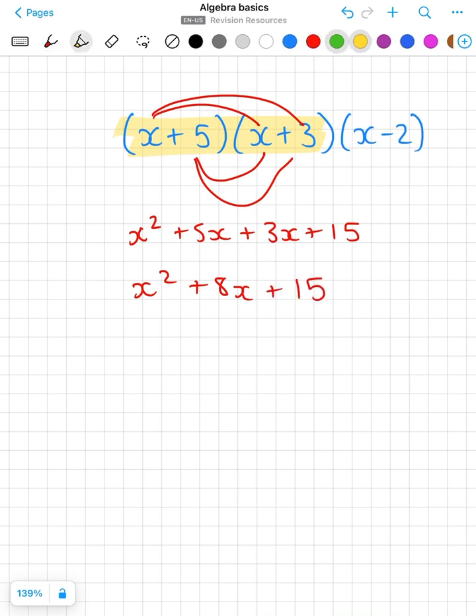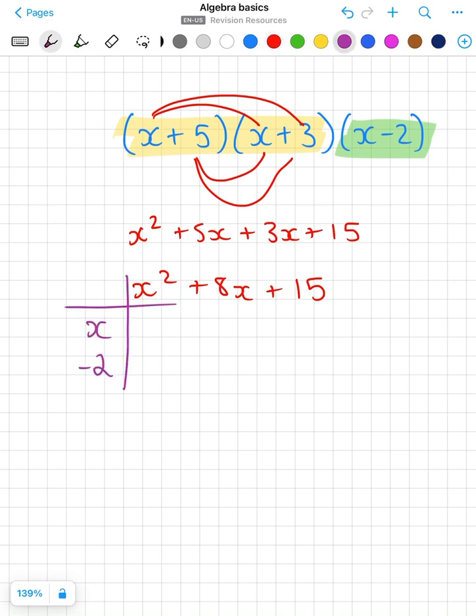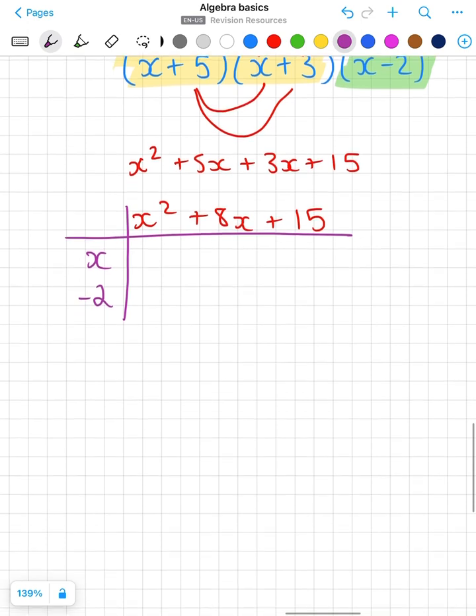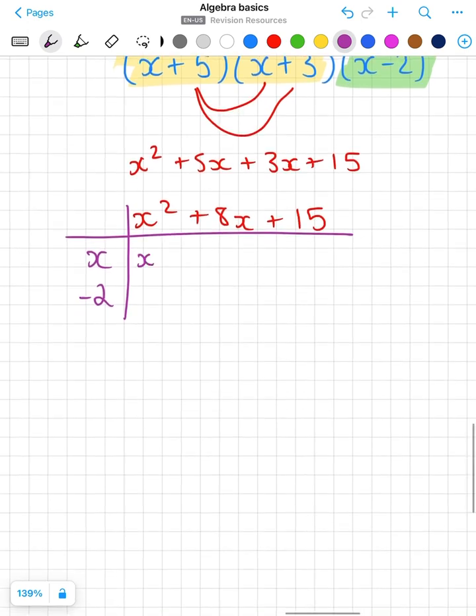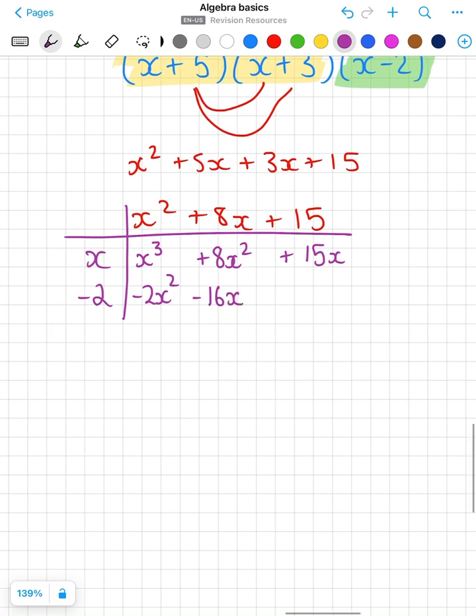Then use your grid method to multiply the third bracket. X squared times x is x cubed. Follow the rest, make sure you include your signs. So plus 8x times minus 2 is minus 16x, minus 2 times positive 15 is minus 30.